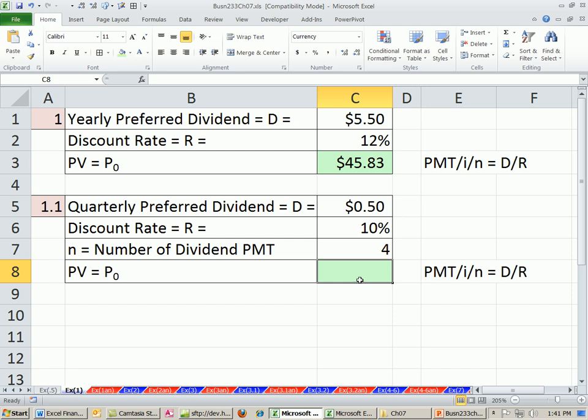Quarterly preferred dividend. I'm simply going to take that quarterly preferred dividend, $0.50, and divide it by, in parentheses, 10% divided by 4, because we have to get our period rate. So I'm willing to pay $20 for that stock.